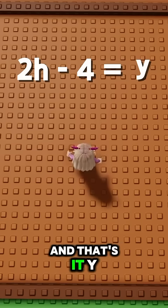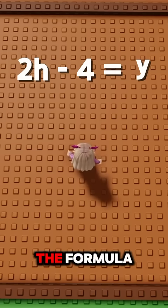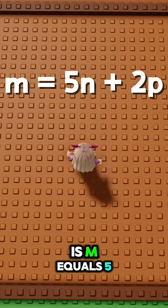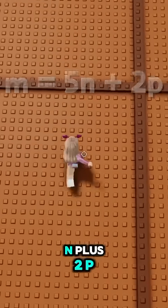And that's it. y is now the subject of the formula. Your turn. Make p the subject. The formula is m equals 5n plus 2p.